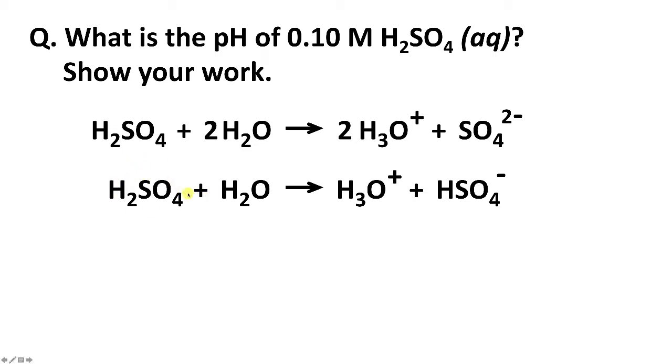First of all, H2SO4 loses one hydrogen ion to make hydronium and then the HSO4 minus ion, and then this HSO4 minus ion can lose another hydrogen. So this hydrogen can combine with water to make H3O plus and the sulfate ion.